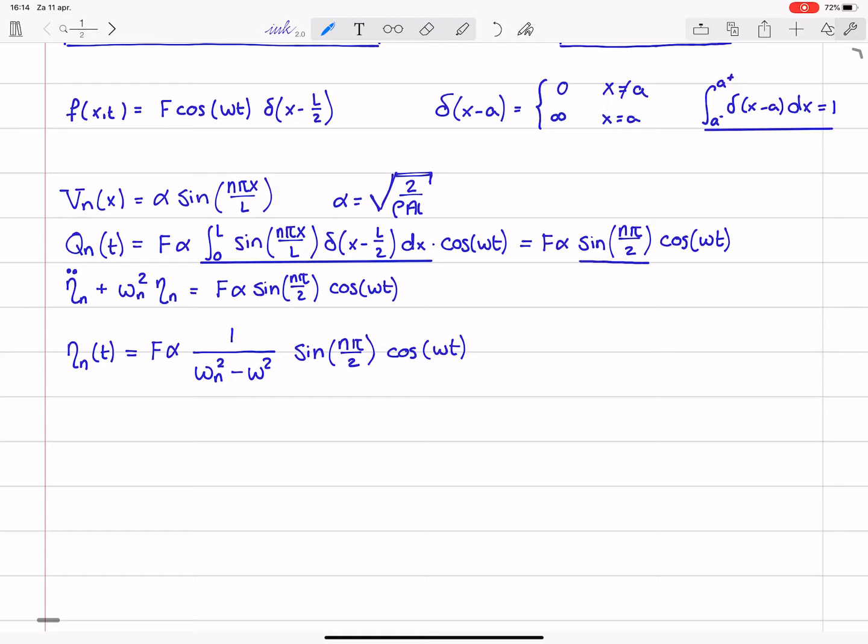So, that can be seen from this sine and you can also see that we have this omega n squared minus omega squared in the denominator and that means that resonance occurs whenever the excitation frequency equals one of the infinitely many natural frequencies.